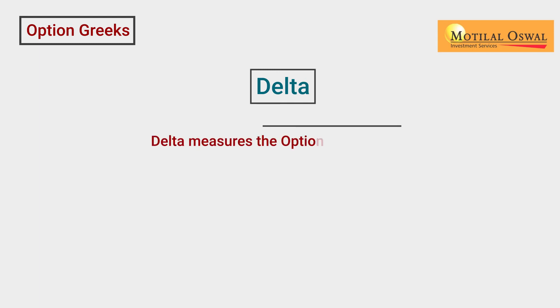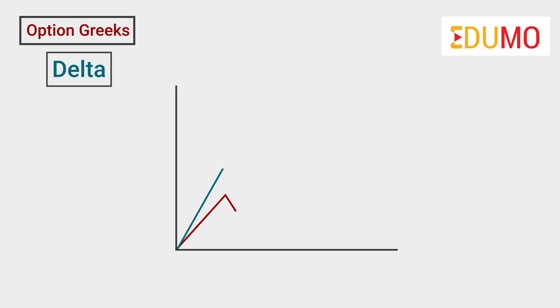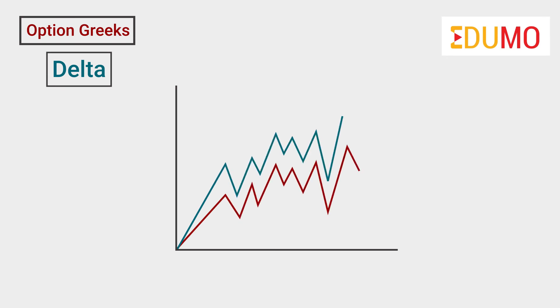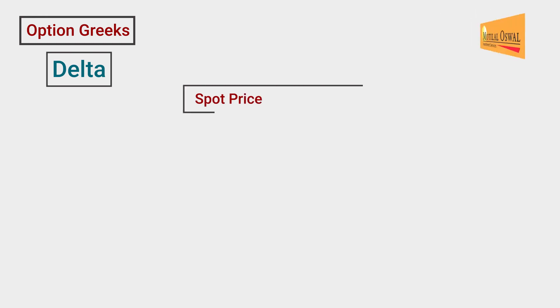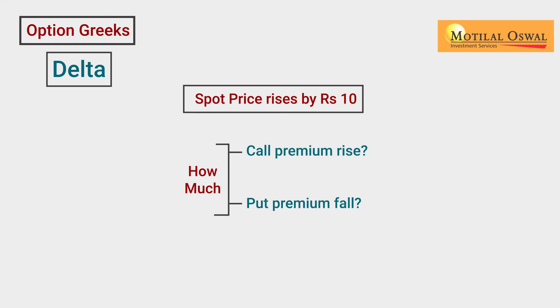First is the Delta. Delta measures the option's premium sensitivity with the change in the underlying stock price or spot price. With a one unit change in the underlying price, how much the option premium is going to change, with other factors remaining constant, is basically measured by the Delta. For example, if the spot price rises by Rs 10, how much will the call premium rise, or how much will the put premium fall, is measured by Delta.